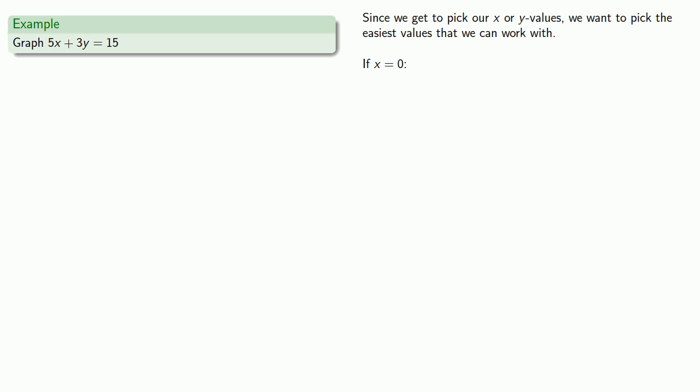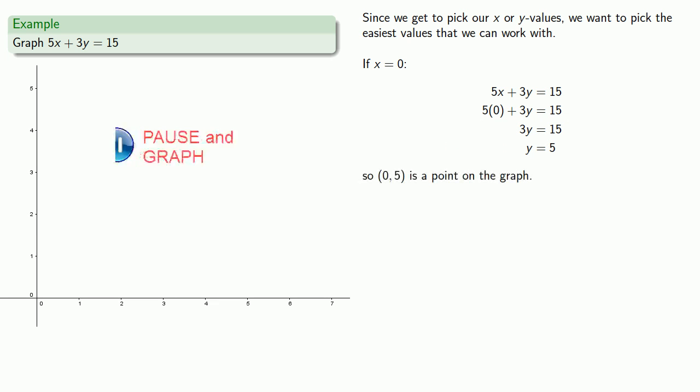Then, substituting that into our formula gives us an equation that we can solve for y, and we find y equals 5. So, 0, 5 is a point on the graph.